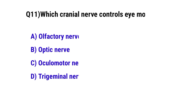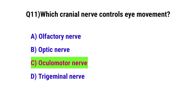Question number 11. Which cranial nerve controls eye movement? The correct option is C: Oculomotor nerve.